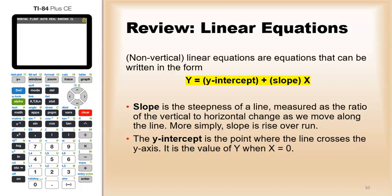We may be more familiar with the form y equals MX plus B, or in this case B plus MX. The slope, the one that's multiplying the X value, is the steepness of the line as measured as the ratio of the vertical to horizontal change as we move along the line.